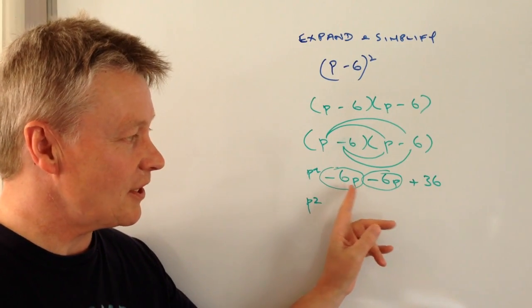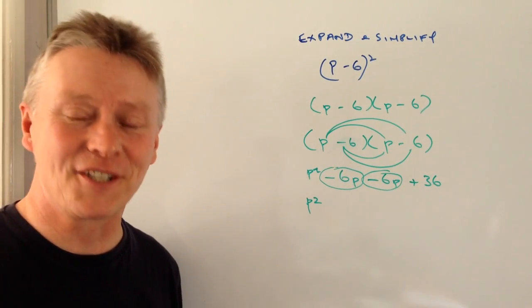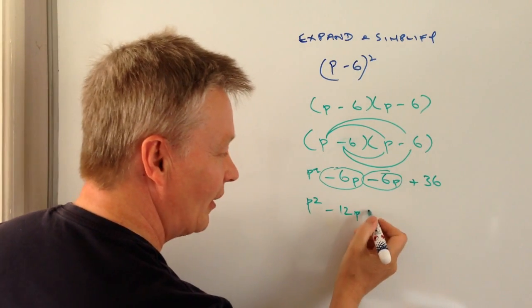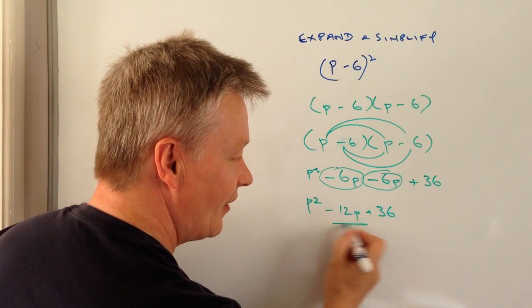Well, minus 6p minus 6p is minus 12p. That'll go like that and then I've got plus 36 at the end.